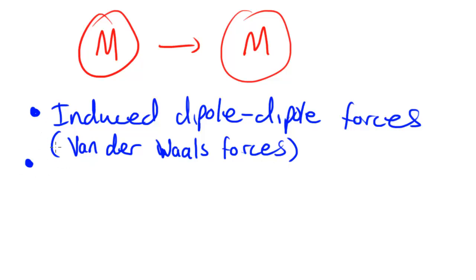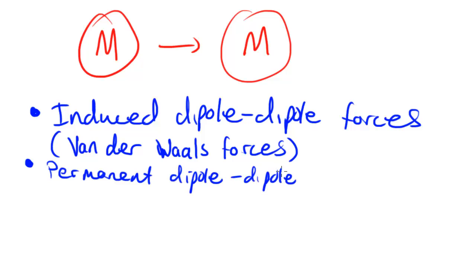The second type is called permanent dipole-dipole forces. At the end of my last video I talked a little bit about forces of attraction between two HCl molecules. I did a small diagram of attractive forces between two HCl molecules, and as I said in that video, those two molecules had dipoles, and those would be an example of the permanent dipole-dipole forces.